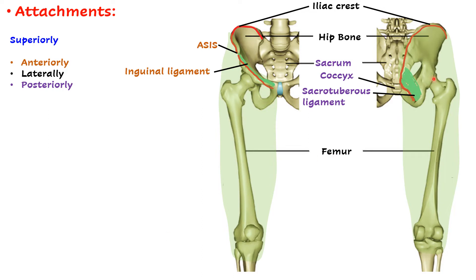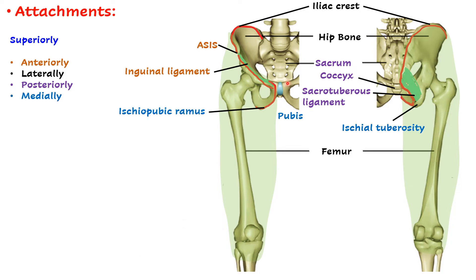Posteriorly it is attached to the outer margin of the iliac crest, and via the gluteal fascia it is attached to the sacrum, coccyx, and the sacrotuberous ligament — the ligament stretching between the sacrum and the ischial tuberosity. Medially it is attached to the ischiopubic ramus and the body of the pubis.